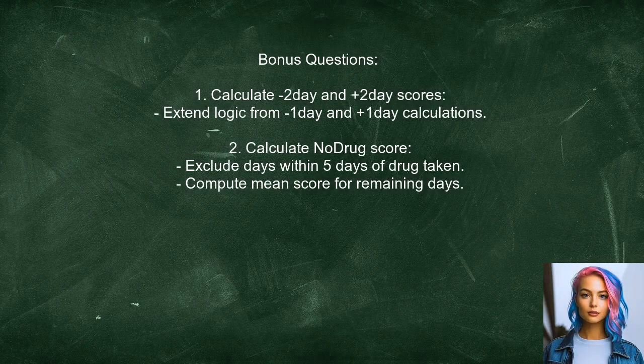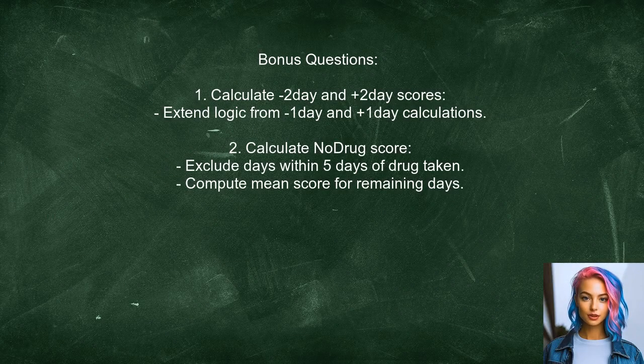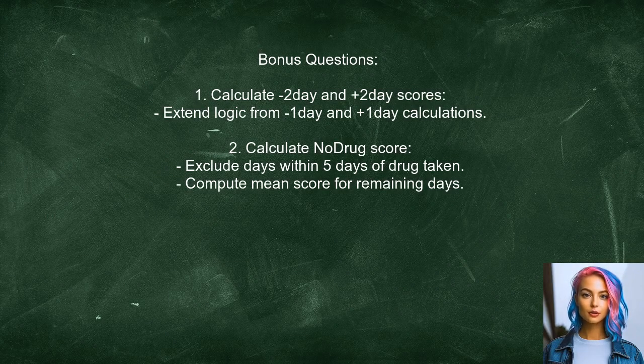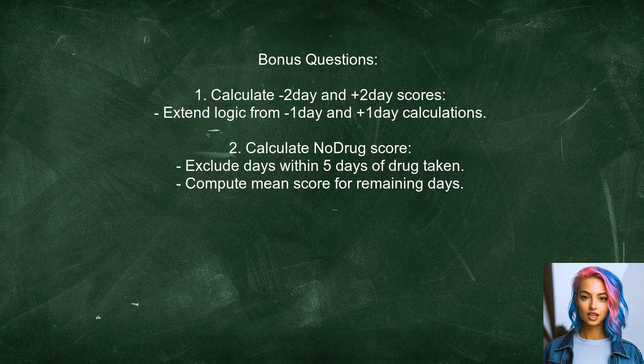For the bonus questions, the user can adapt the calculations to include Minus2Day and Plus2Day scores by extending the logic used for Minus1Day and Plus1Day. Additionally, to calculate a no-drug score, the user should filter out any days within 5 days of a drug-taking day and then compute the mean score for the remaining days.